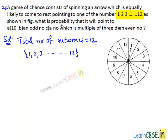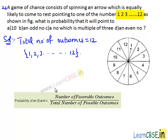We need to find the probability that the arrow will point to 10, an odd number, a number which is a multiple of 3, and an even number. We know that probability of an event is the ratio of number of favorable outcomes of the event to the total number of possible outcomes.